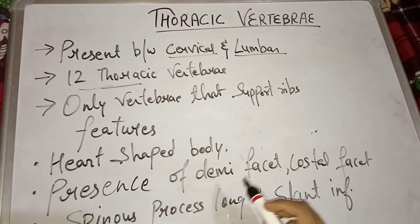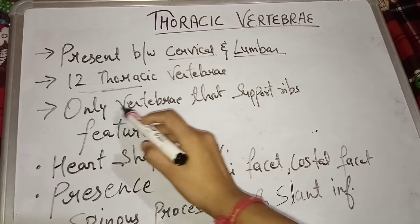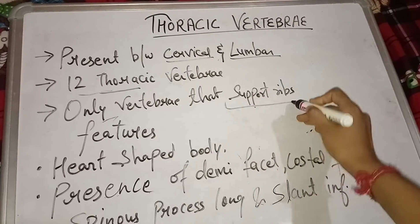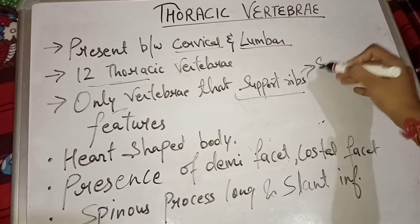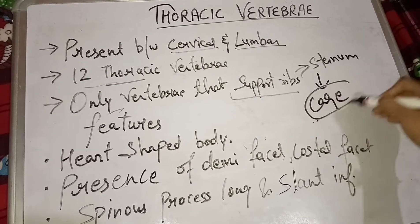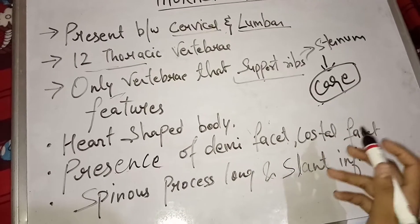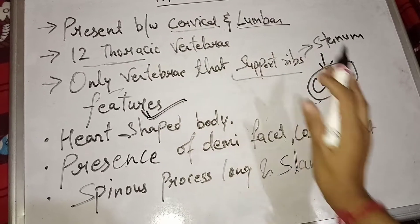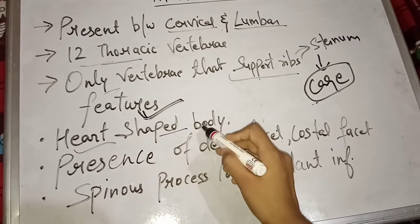Thoracic vertebra is the only vertebra that supports the rib, and along with ribs and sternum it forms the thoracic cage, which is helpful in protecting your vital organs like your heart and lungs. Now let's look at some features of thoracic vertebra.